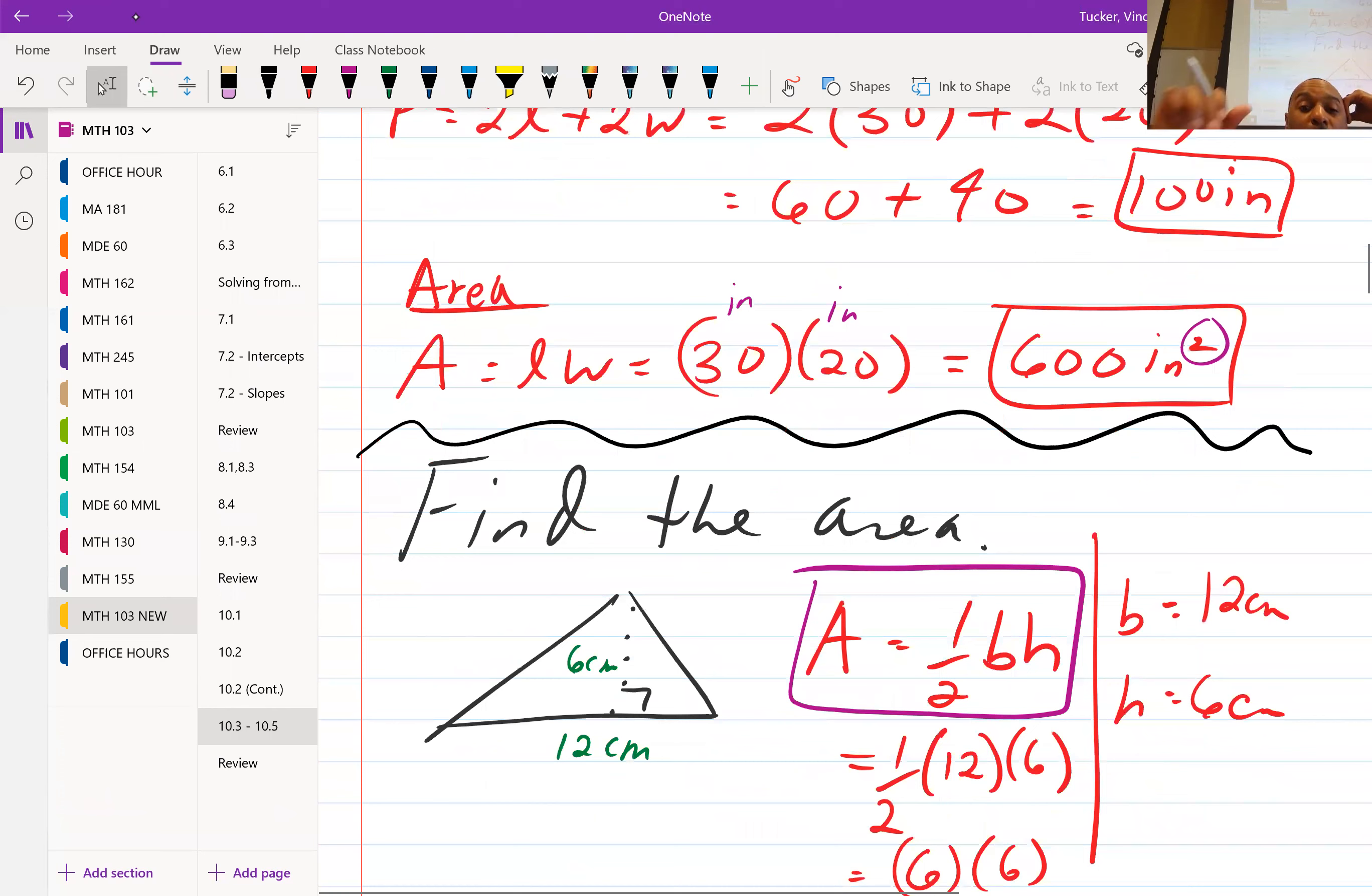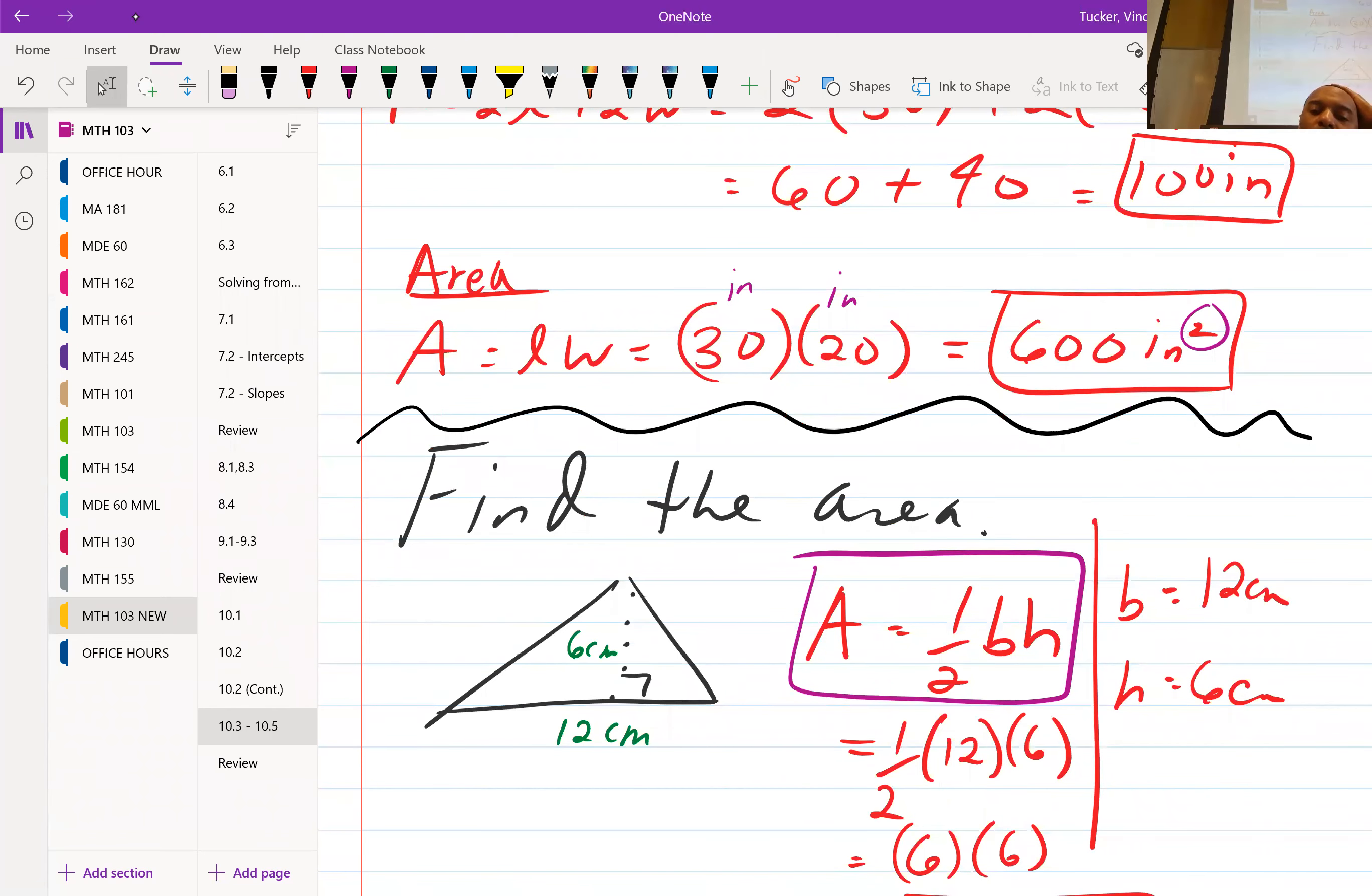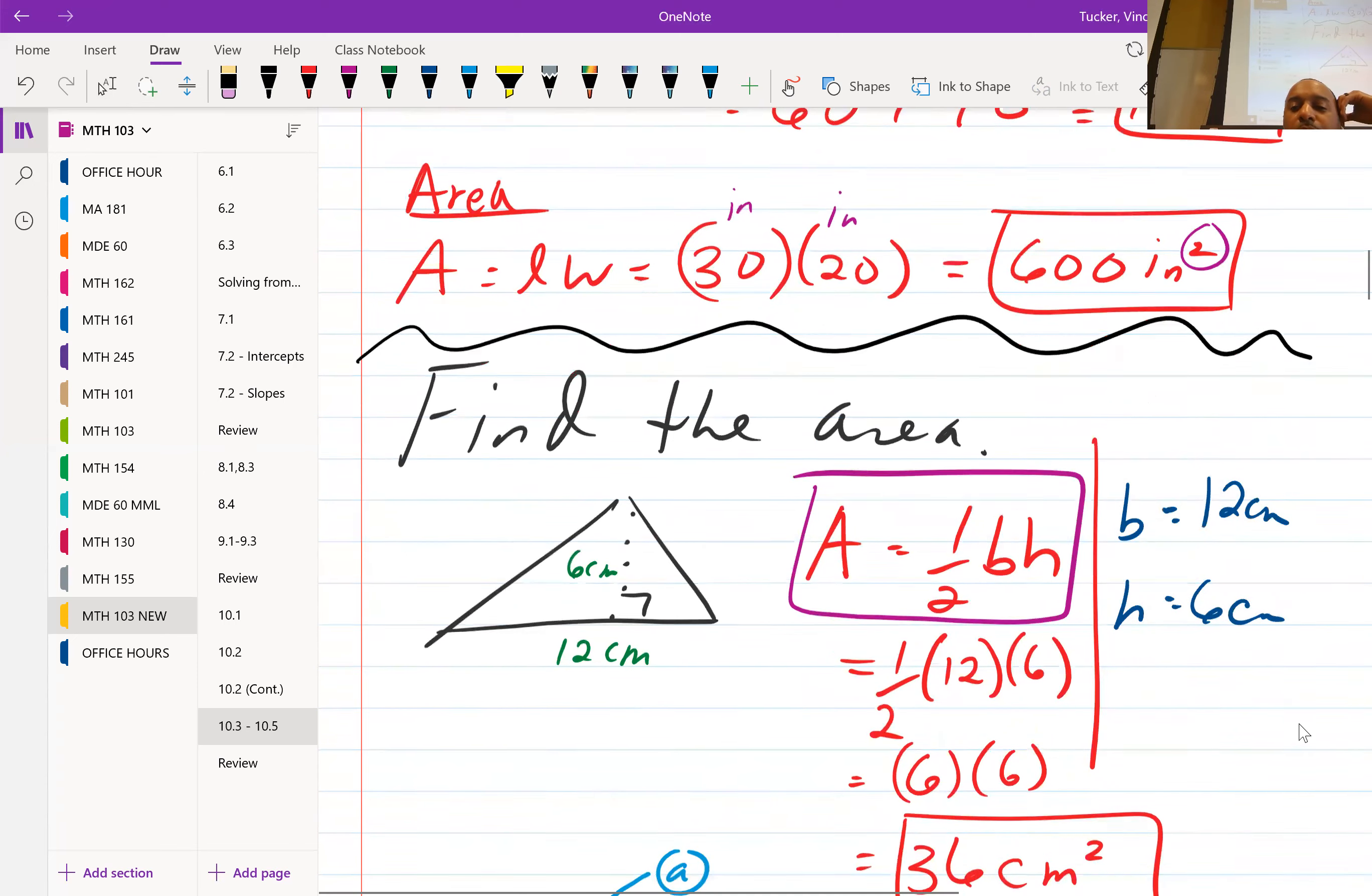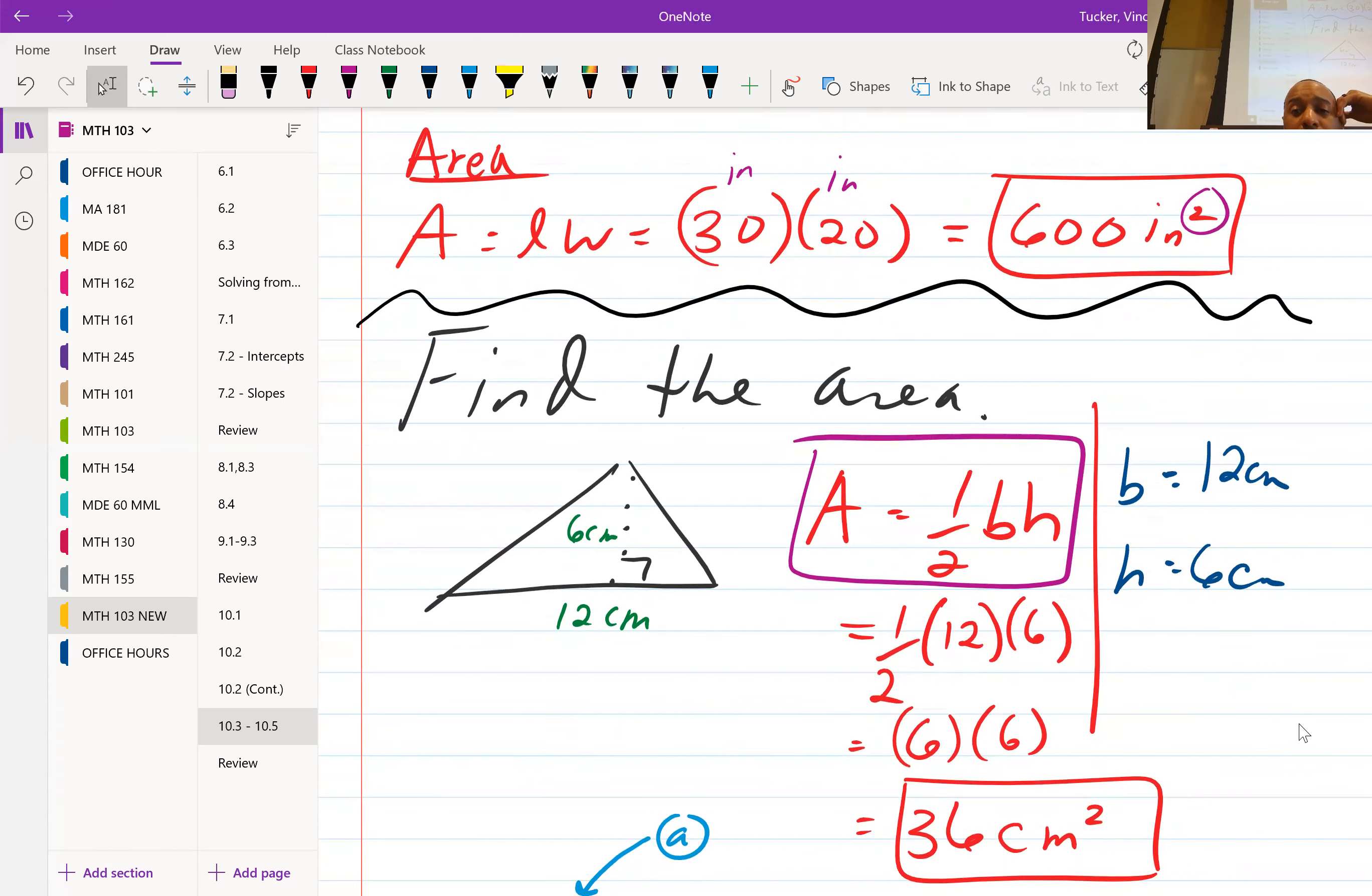Next one, we want to find the area of the triangle. All right, so the formula for the area of a triangle is one half base times height. So base is normally used for the bottom side, and then your height, you see, is 6. So plugging in accordingly, one half base times height, that's one half times 12 times 6. Now that one half is not multiplied or distributed to the 12 and 6, you just multiply it to one of them. So one half of 12 is 6, 6 times 6 is 36, and that's centimeter squared.